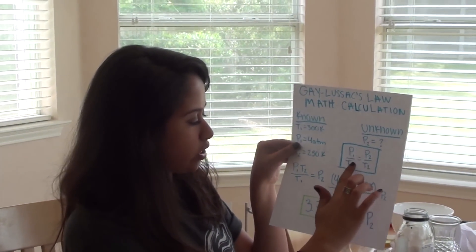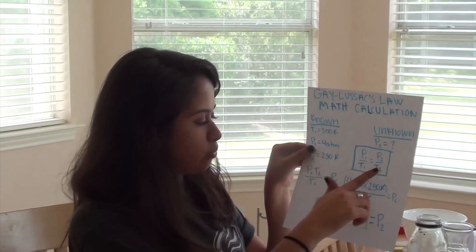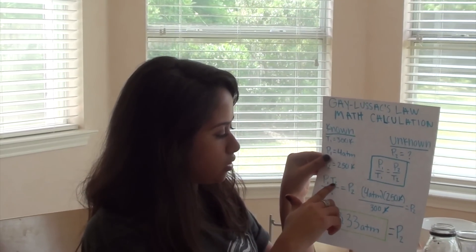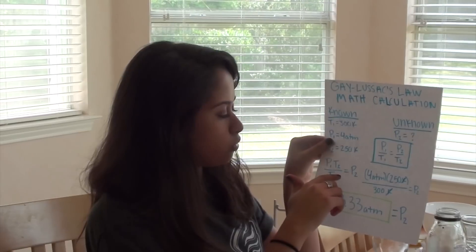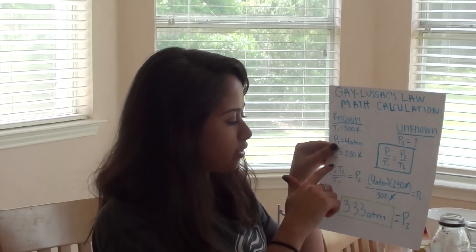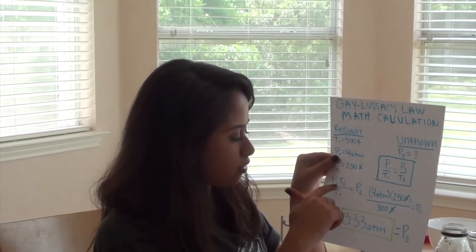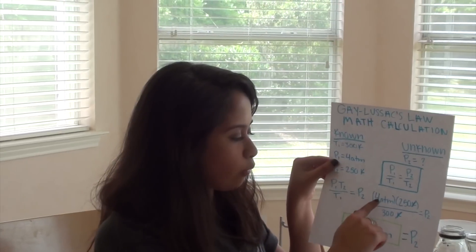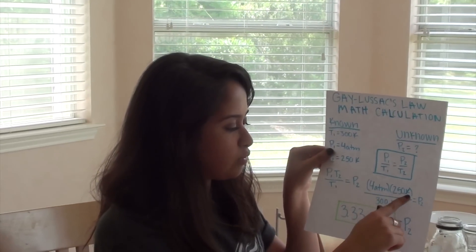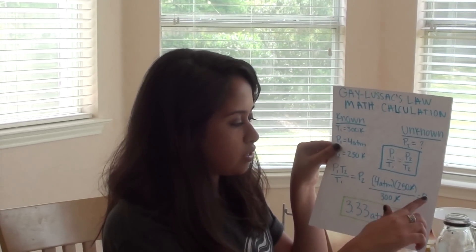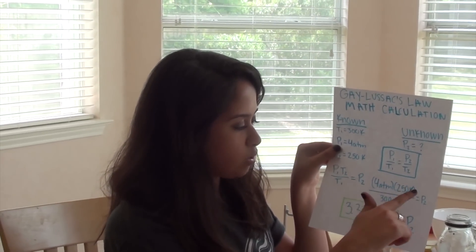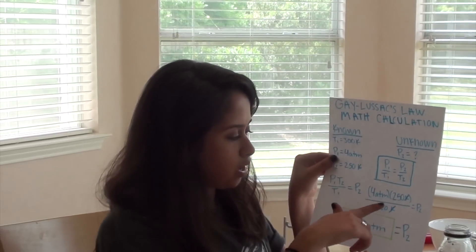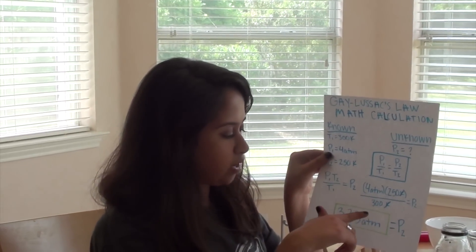You start with the original equation and then manipulate it to solve for P2, giving you P1 times T2 over T1 equals P2. You plug in 4 ATM, 250 K, and 300 K, then cancel out the Kelvins because they appear on top and bottom. When you multiply it out, you get 3.33 ATM for P2.